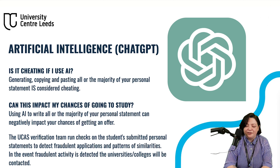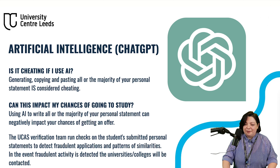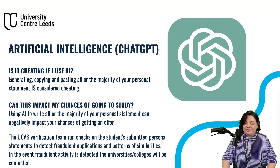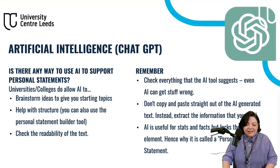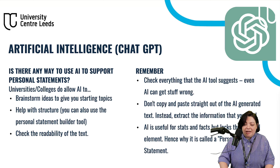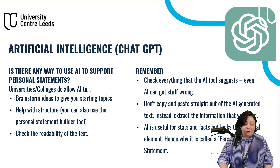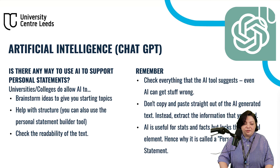AI, and most notably ChatGPT, is used by millions of people worldwide including in education, work and personal lives. It's important to know the rules around AI in personal statements. UCAS considers using ChatGPT to write your whole personal statement as cheating, and it may impact your application. They have tracking software that can determine if a statement is AI-generated, and they'll notify institutions if they recognize this. However, you can use AI to brainstorm ideas, help with structure, and check readability. Remember to check everything afterwards and don't copy and paste directly from AI tools. AI is useful for stats and facts but lacks that personal element — which is exactly why it's called the personal statement.